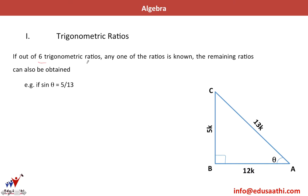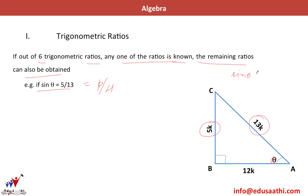If any one of the six trigonometric ratios is known, the remaining ratios can also be obtained. For example, if sin theta equals 5/13, since sin theta is perpendicular by hypotenuse, I write perpendicular as 5k and hypotenuse as 13k. We use this factor k because the actual sides could be 5 and 13, or 10 and 26, etc. So perpendicular is 5k and hypotenuse is 13k.